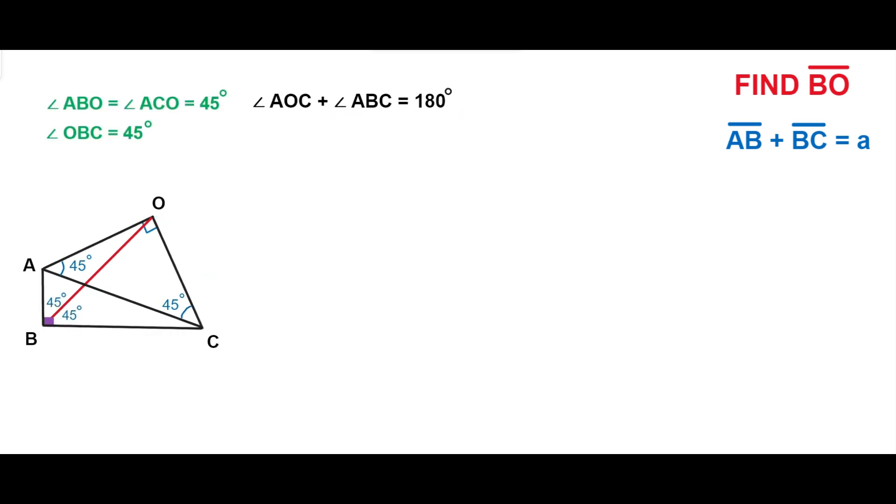Next, let's continue the segment BC and label the point D on the ray BC such that the segment CD is congruent to segment AB.